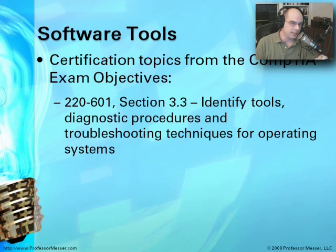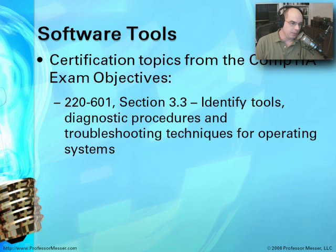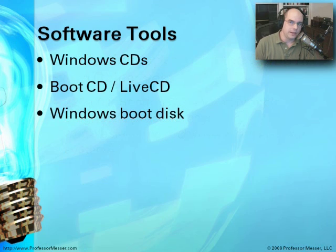For the 2260-1, which is the Essentials Exam, in section 3.3, it talks about you needing to know how to identify tools, diagnostics, procedures, and troubleshooting techniques for operating systems. And to be able to do that, we're going to need software tools.